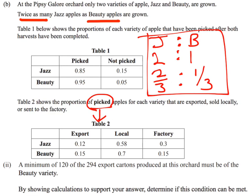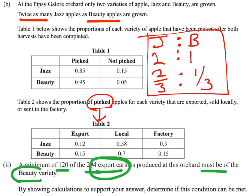The question states that a minimum of 120 of the 294 export cartons produced must be of the Beauty variety. This is a conditional probability question focused on just the export cartons, and we need to show with calculations whether or not this condition can be met.